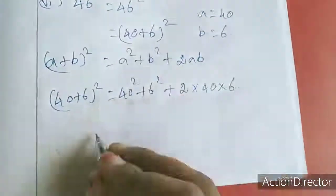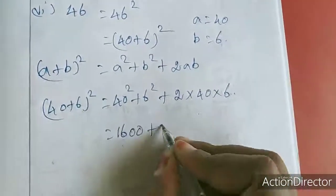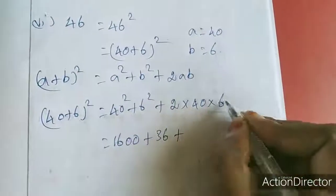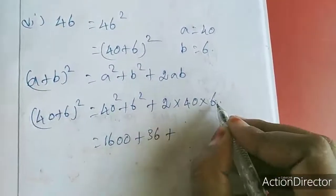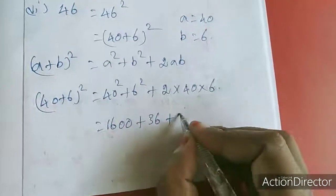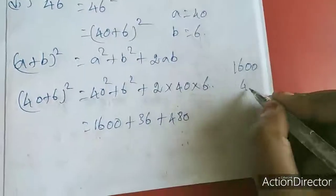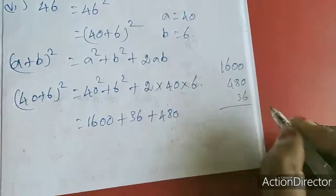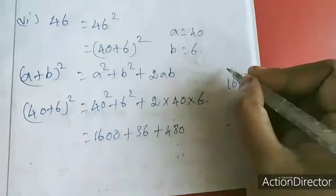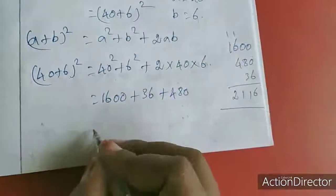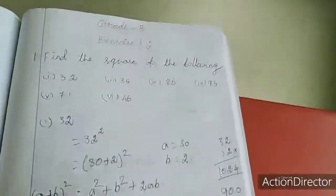40 square means 1600, plus 36, plus 480. I am adding here. So the answer is 2116.